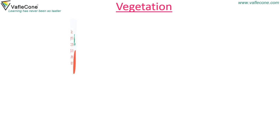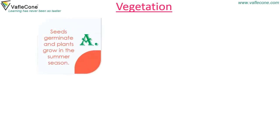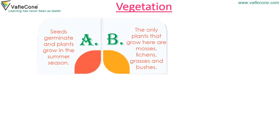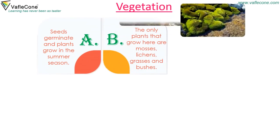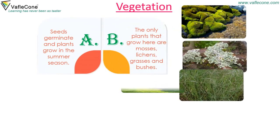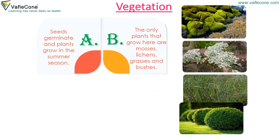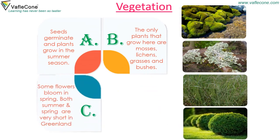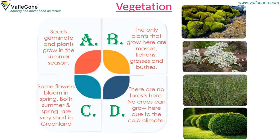Vegetation. Seeds germinate and plants grow in the summer season. The only plants that grow here are mosses, lichens, grasses, and bushes. Some flowers bloom in spring. Both summer and spring are very short in Greenland. There are no forests here, and no crops can grow due to the cold climate.